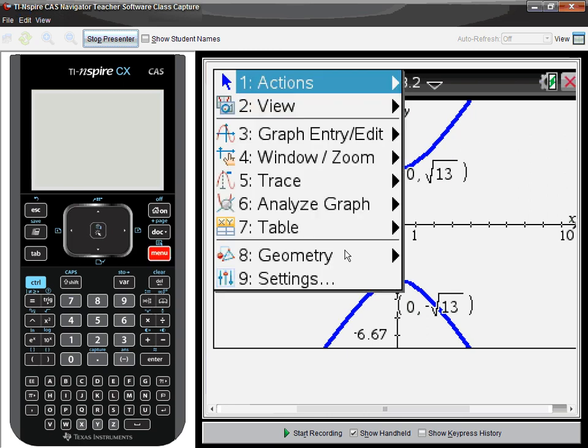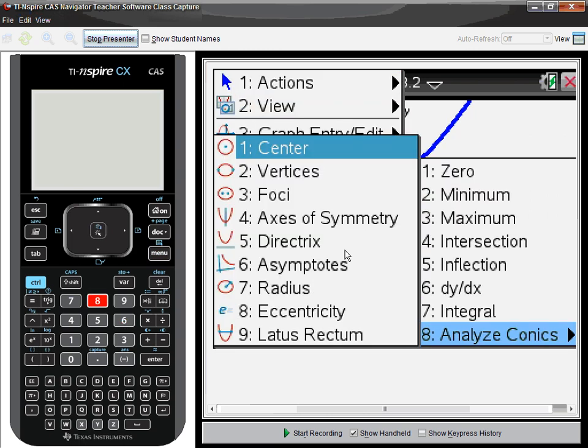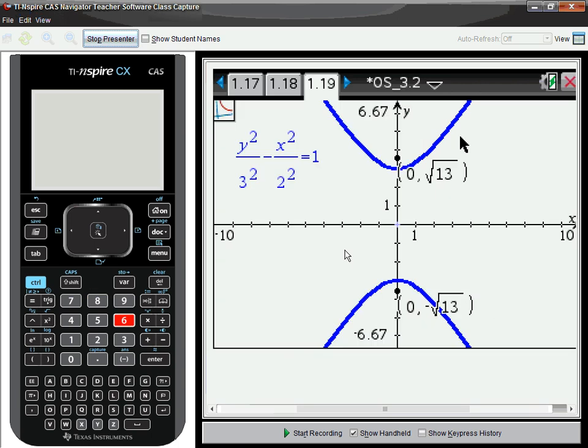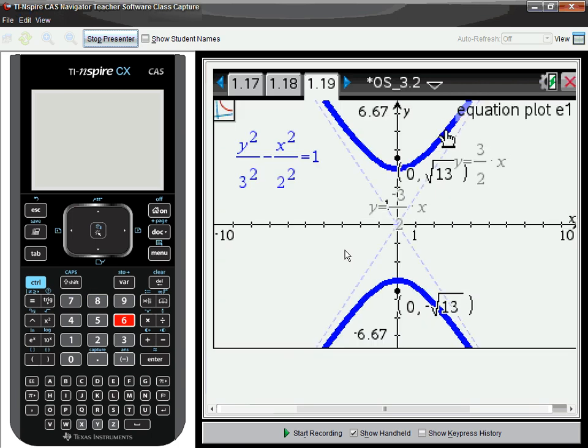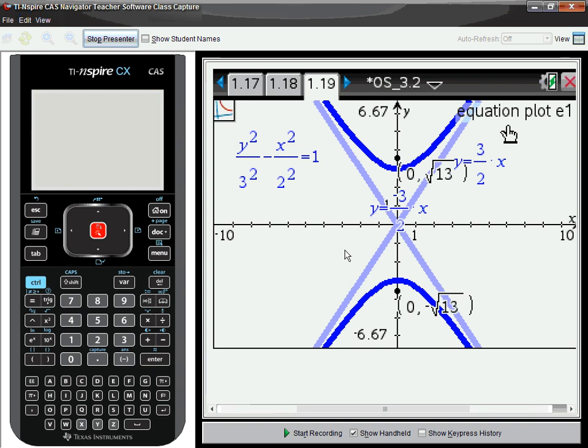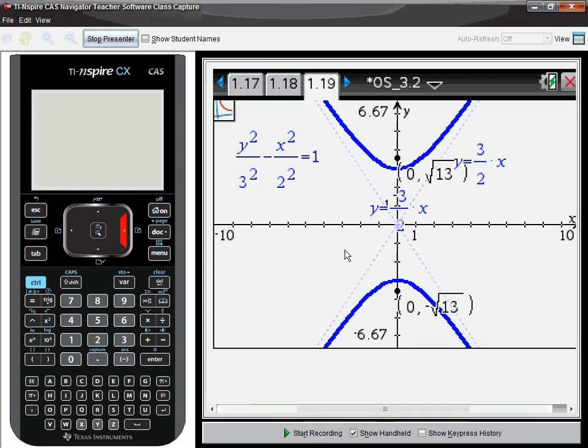Let's look at the asymptotes also. Number 6. And notice it gives me the equations in slope form, y equals 5, 3 halves x, y equals negative 3 halves x. Let me see if I can grab that and pull it away a little bit out of the way there.